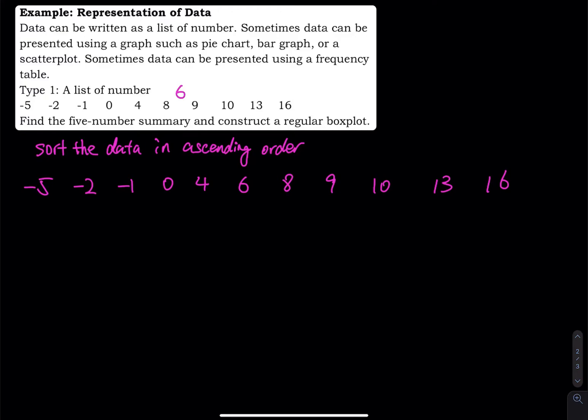In this video, we are going to talk about two types of representation of data. First, we will find the five-number summary, and then we will use the five-number summary to construct a regular box plot.